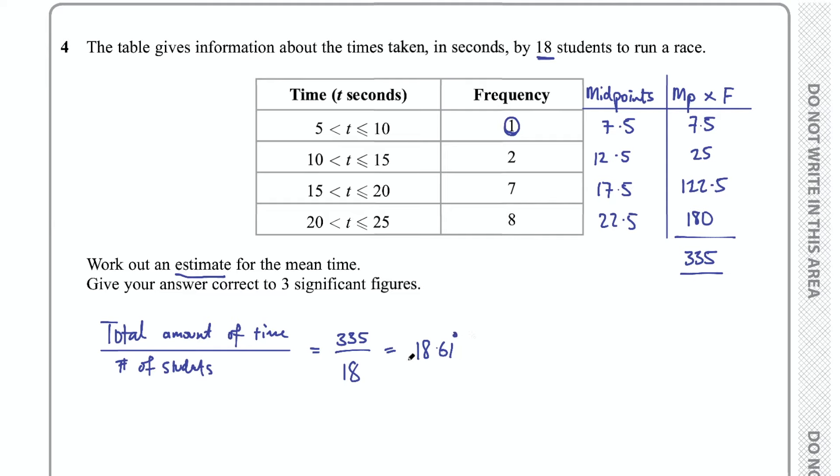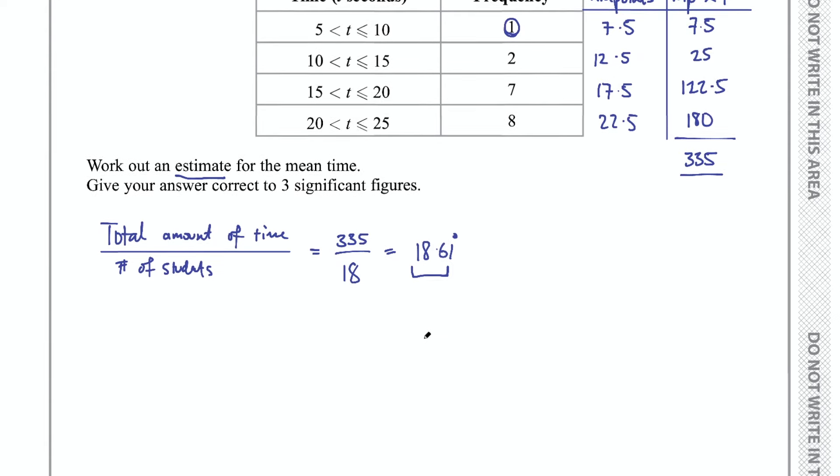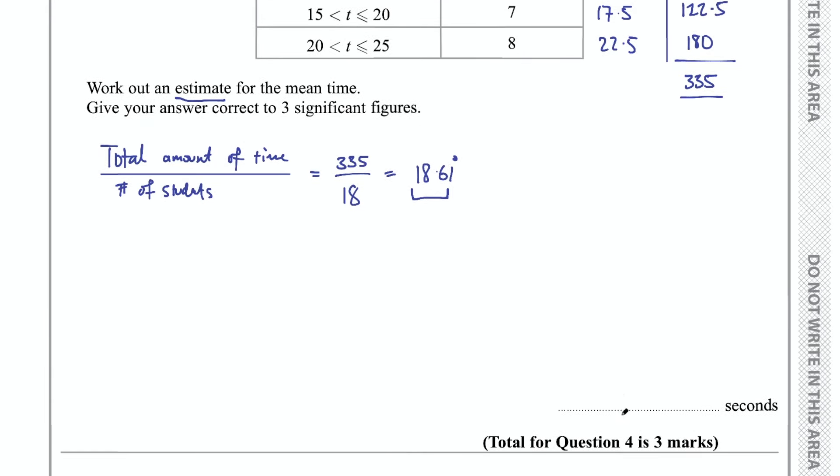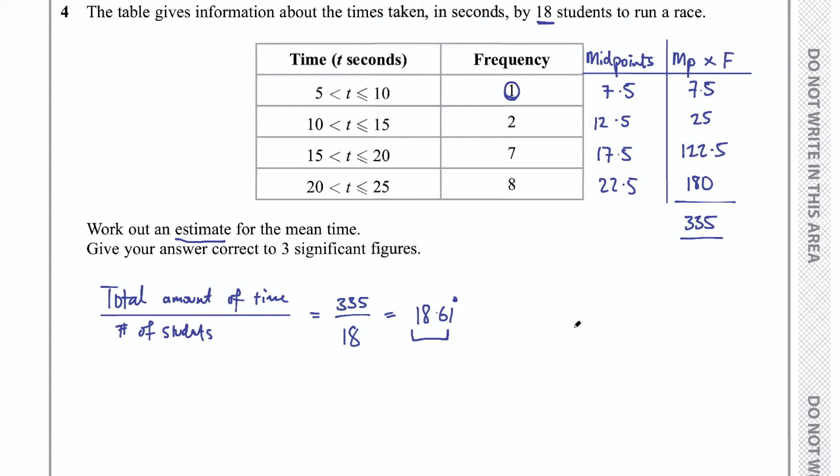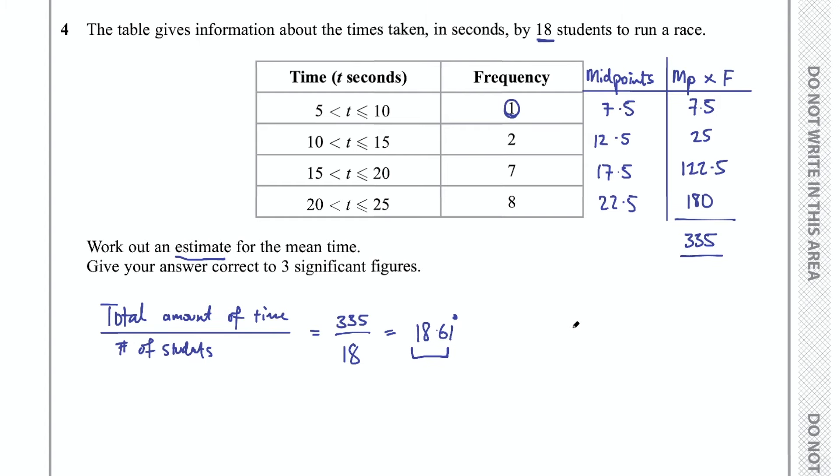And then keep in mind, the question says give your answer correct to 3 significant figures. These are the first 3 significant figures, and that 6 is going to stay as 6. We don't need to round it up. So the final answer for this question is 18.6, and that is how you find an estimate for the mean time, or the mean from a frequency table.